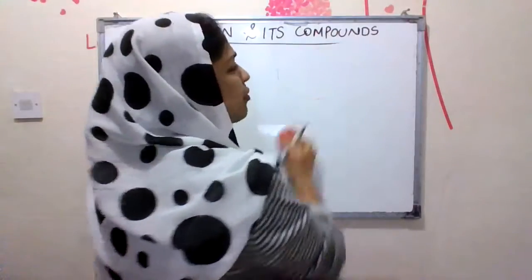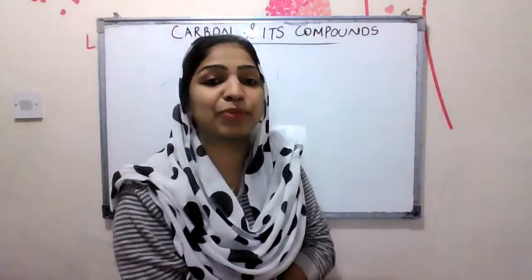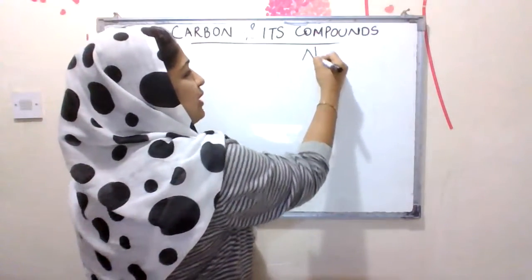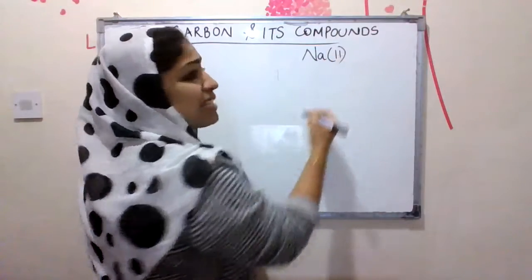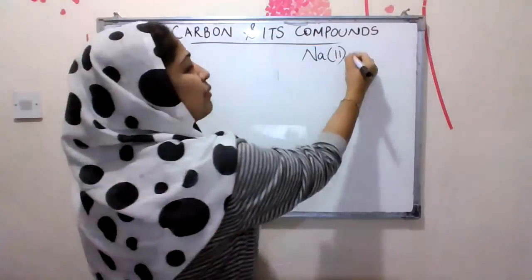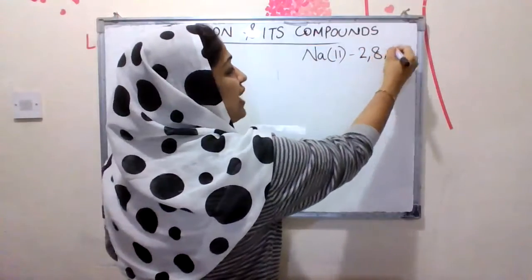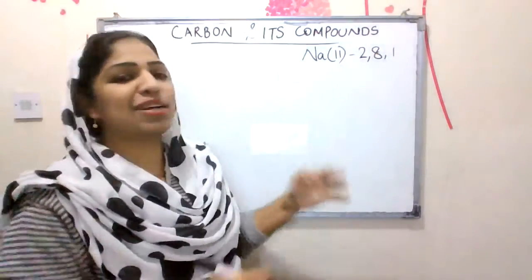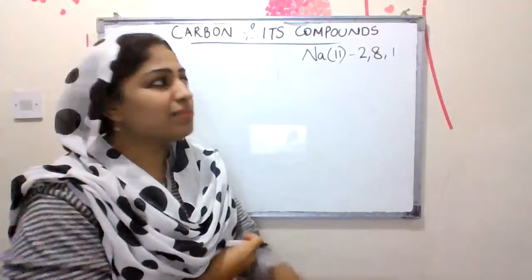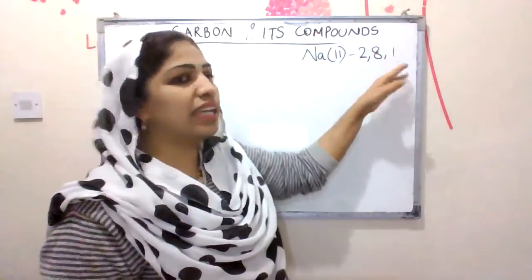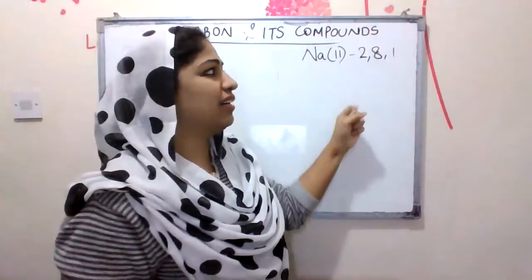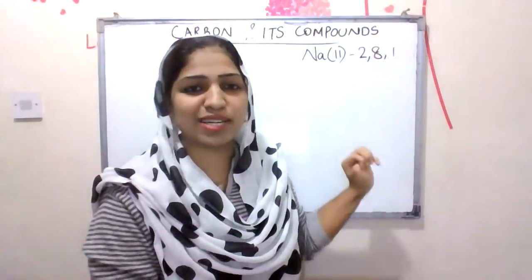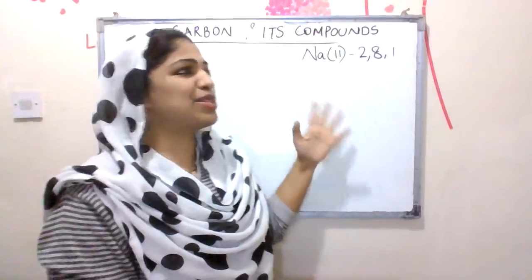Let's talk about metals and non-metals and ionic bond formation. Sodium is an element with atomic number 11, and electronic configuration 2,8,1. For sodium to achieve octet completion, it needs to lose its one outer electron.